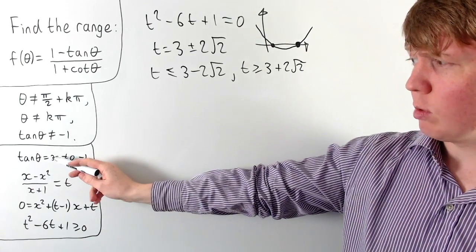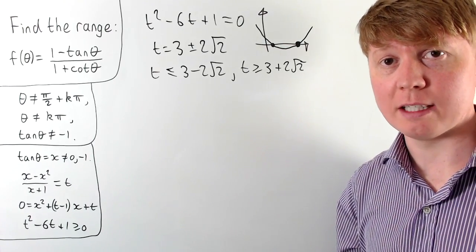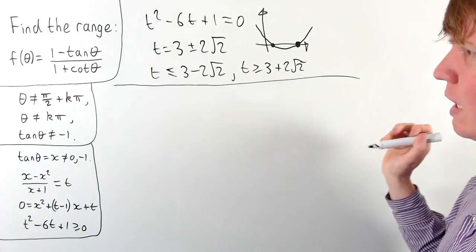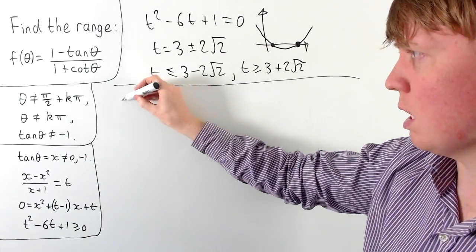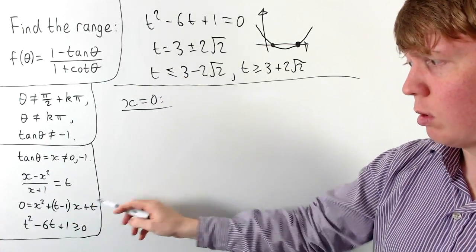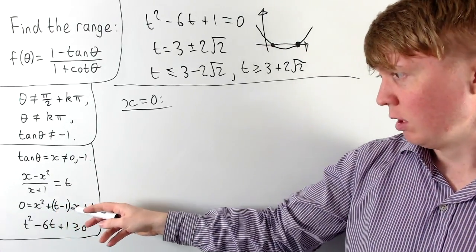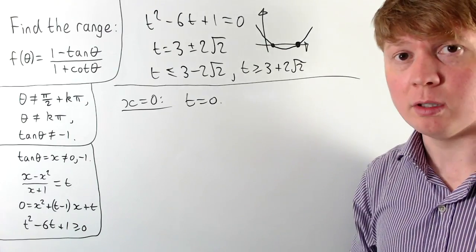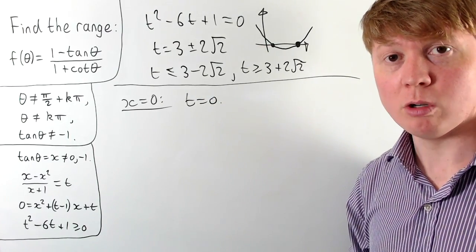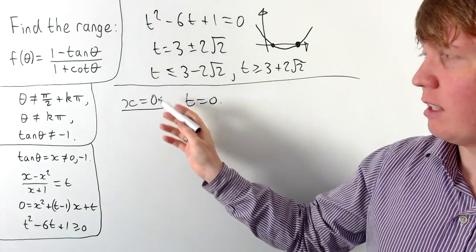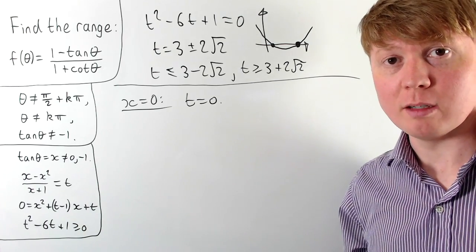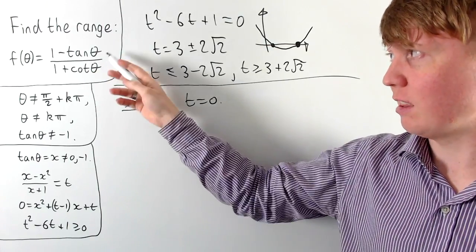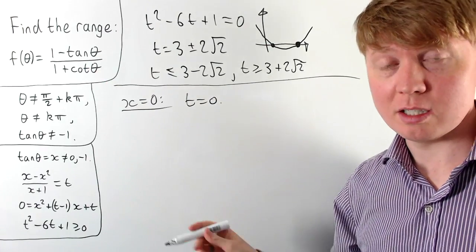We need to check carefully, because x can't equal zero or -1. First, what happens if x equals zero? Looking at our quadratic x² + (t-1)x + t = 0 with x = 0, we'd get 0 = t, so t = 0. This suggests zero is in our range, but when x is zero, tan theta is zero and cot theta wouldn't be well defined — so this particular path to t = 0 isn't actually allowed.